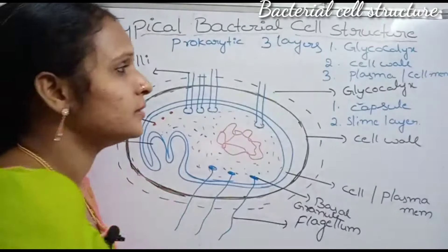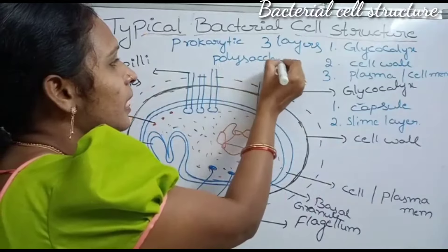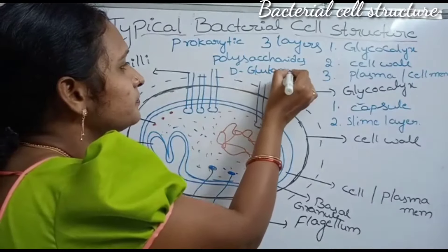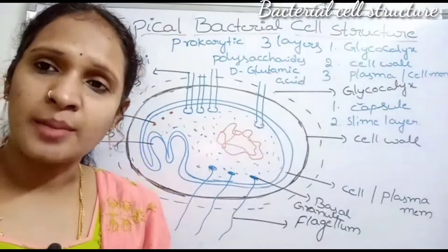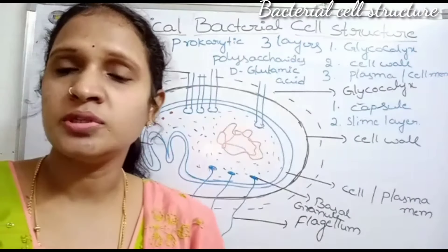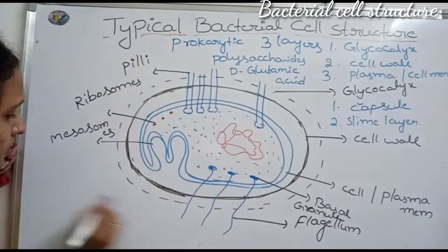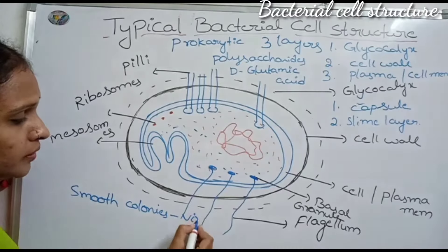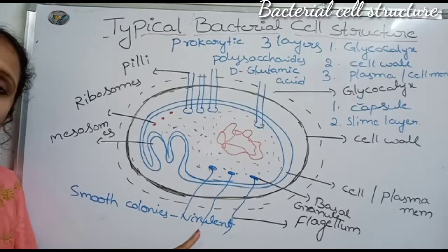The capsule's function is the protection of the cell wall. The capsule is made up of polysaccharides and D-glutamic acid — this is very important for MSET students. Some bacteria produce capsules and some do not. Capsulated bacteria produce smooth colonies and become virulent, meaning they release poisons or toxins causing pneumonia disease.